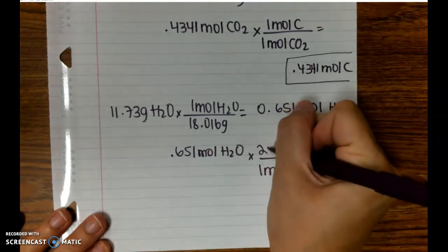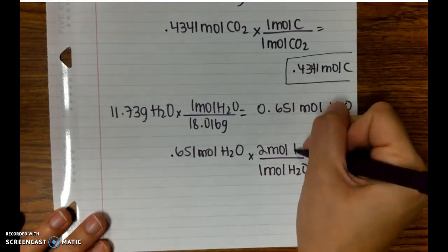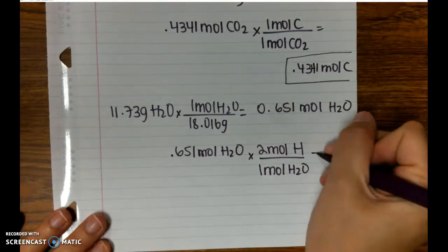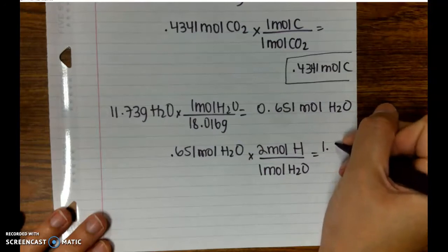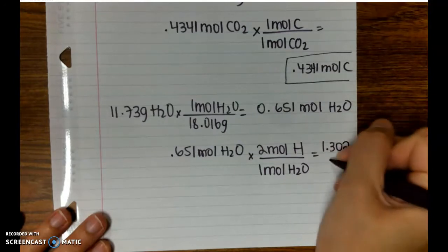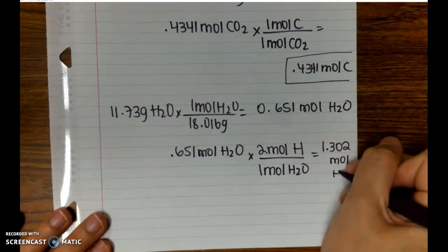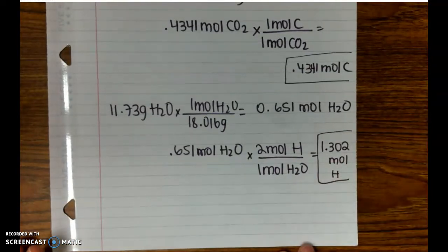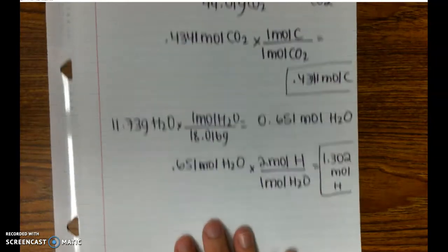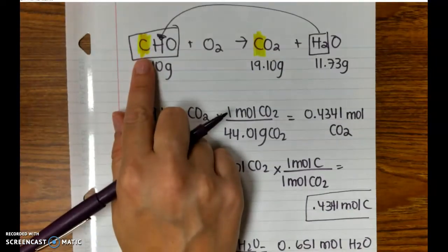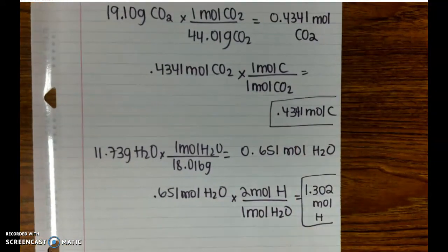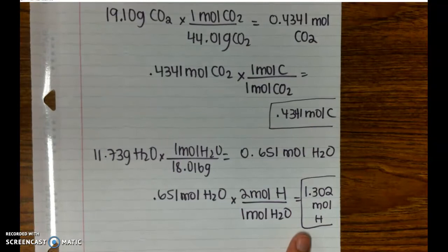So to get moles of hydrogen atoms, I'm going to have to double it, because that's subscript. And when you double it, I'm going to get 1.302 moles of H. So now I know from my original sample that 0.4341 moles were carbon, and I know how many moles of hydrogen I have.